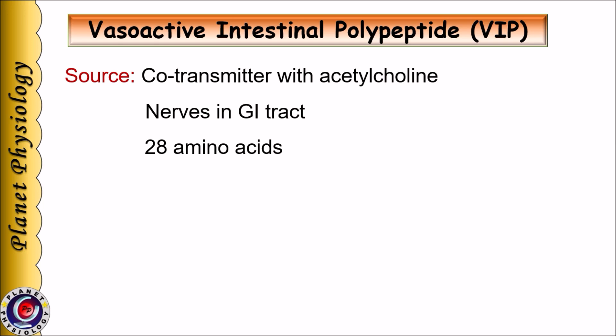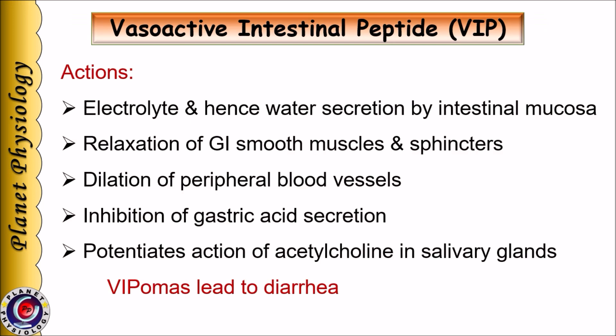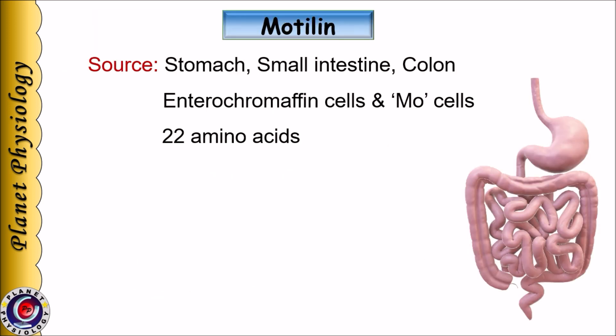The next GI hormone is vasoactive intestinal polypeptide, or VIP. It is secreted as a co-transmitter with acetylcholine by nerve fibers supplying salivary glands, and is also found in nerves in the GI tract as well as in the blood. It has 28 amino acids. VIP is mainly concerned with secretion of electrolytes and hence water by the intestinal mucosa. It causes relaxation of gastrointestinal smooth muscles and sphincters, dilatation of peripheral blood vessels, and inhibition of gastric acid secretion. VIP potentiates the action of acetylcholine in salivary glands. Because of its actions on electrolyte and water secretion and vasodilatation, VIP-secreting tumors (called VIPomas) lead to diarrhea.